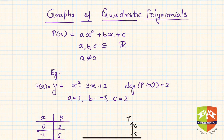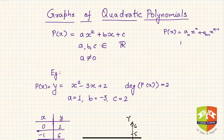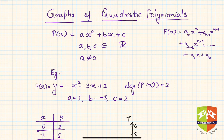Welcome again to another session on polynomials. Like we did linear polynomials in the last class, we are carrying forward and in this session we are going to discuss quadratic polynomials and how to draw graphs for them. Polynomials are defined as p(x) = aₙxⁿ + aₙ₋₁xⁿ⁻¹ + aₙ₋₂xⁿ⁻² and so on, finally a₁x + a₀, where a₁, a₂, a₃, a₀ are all real numbers and n is a non-negative integer.